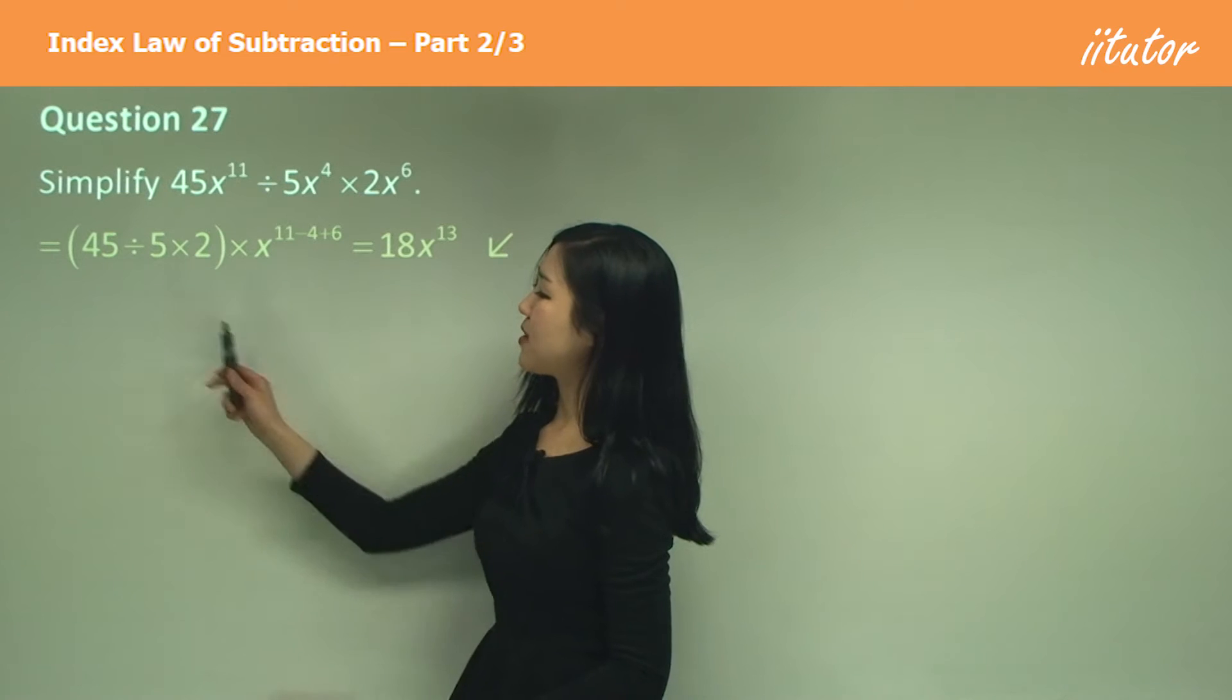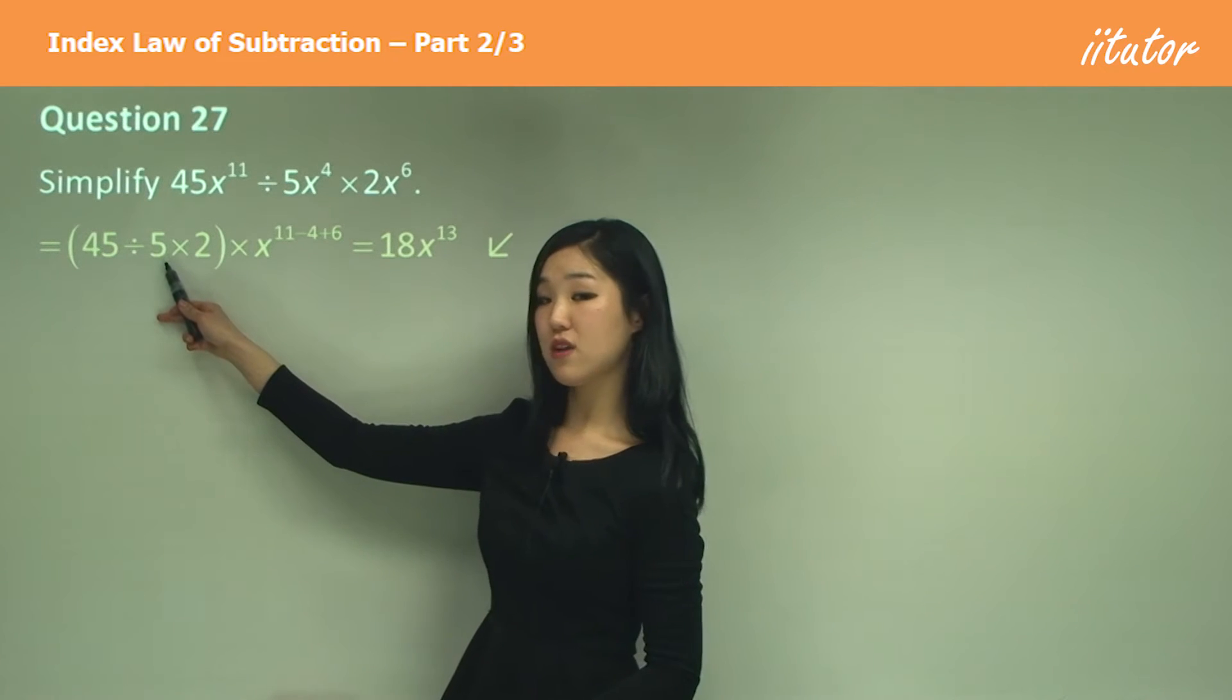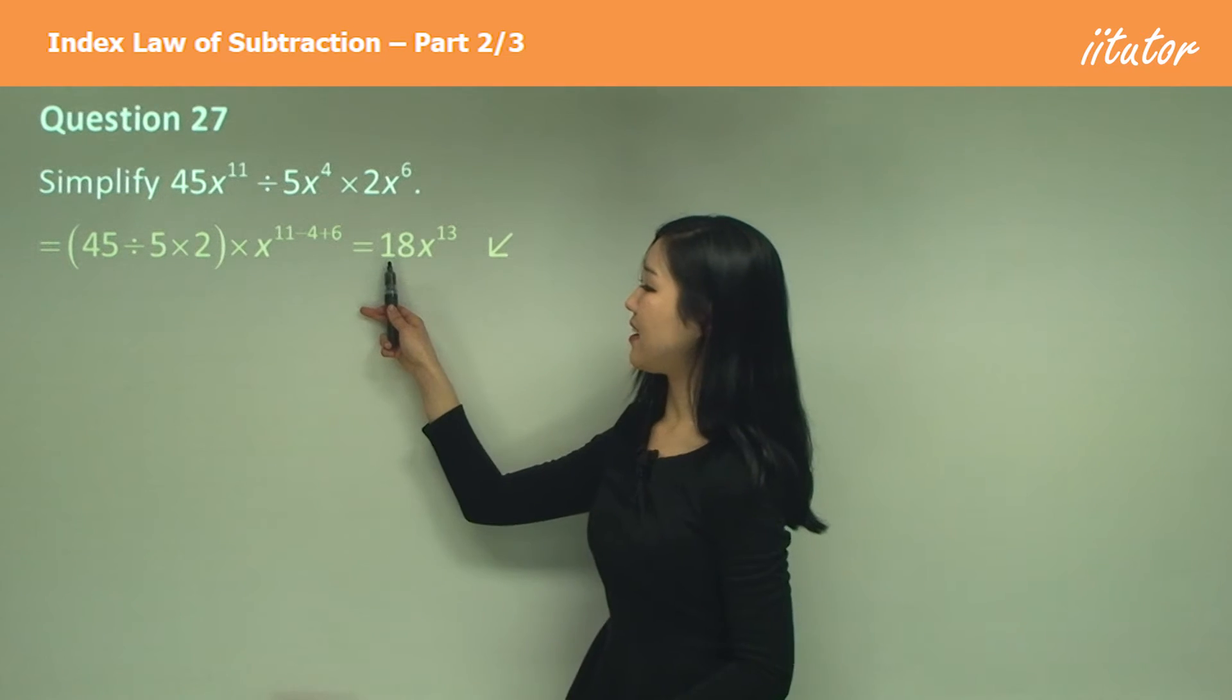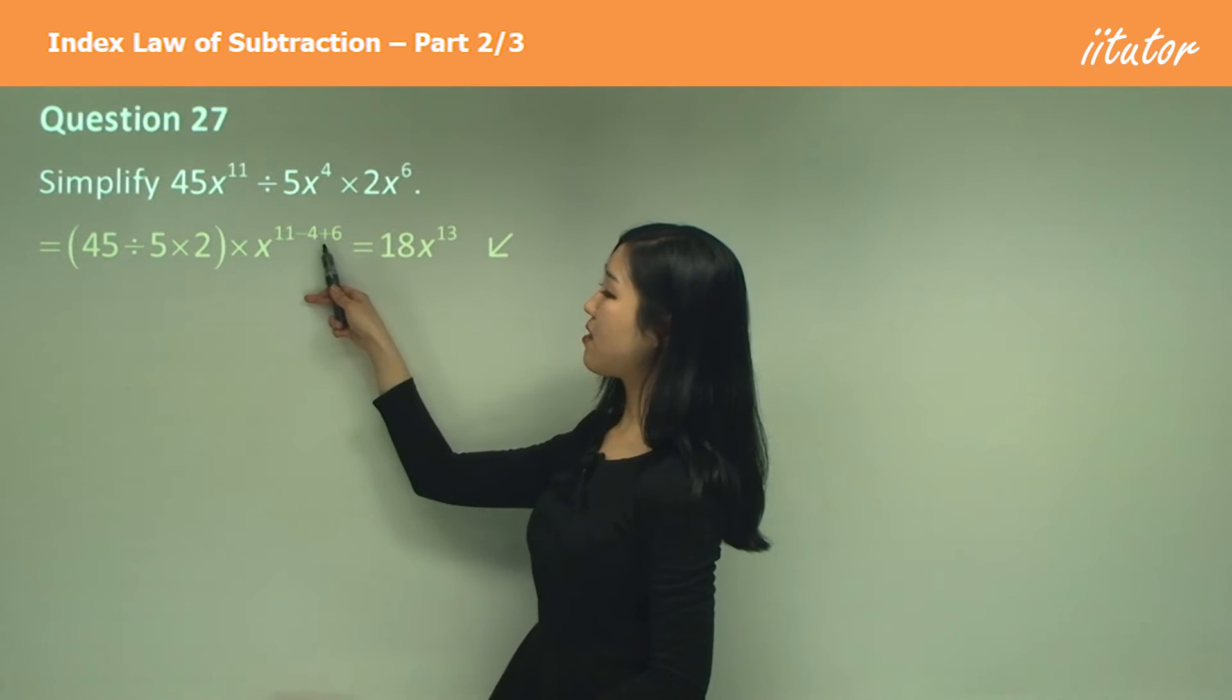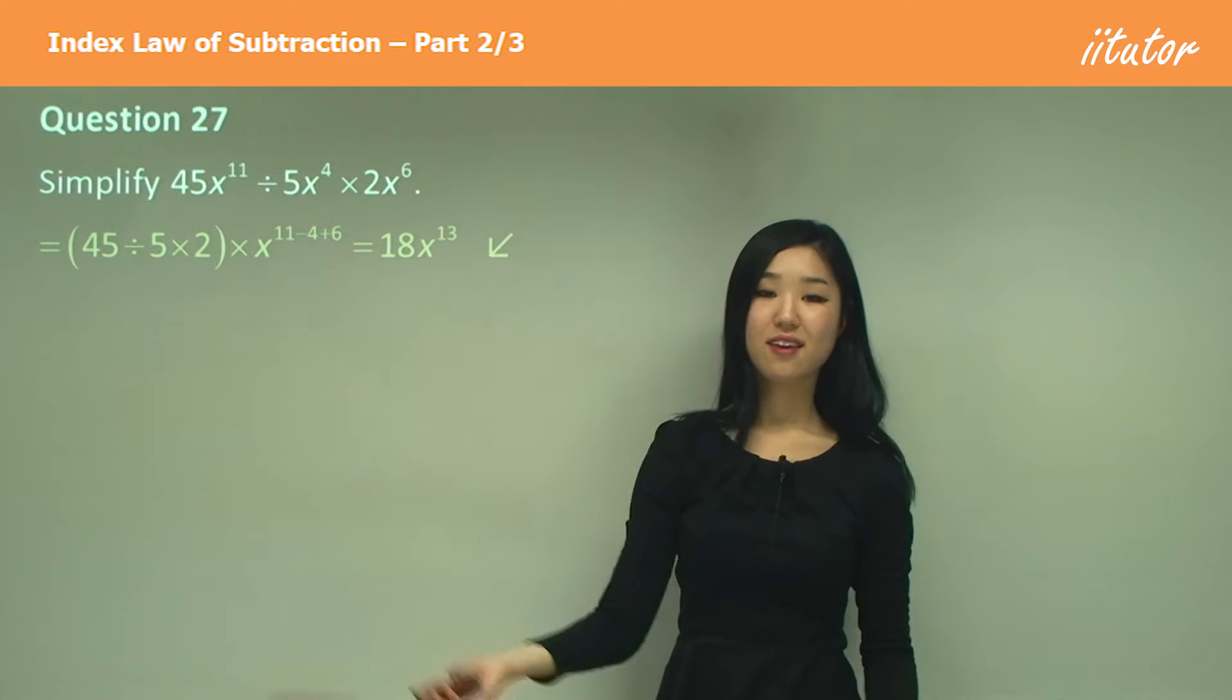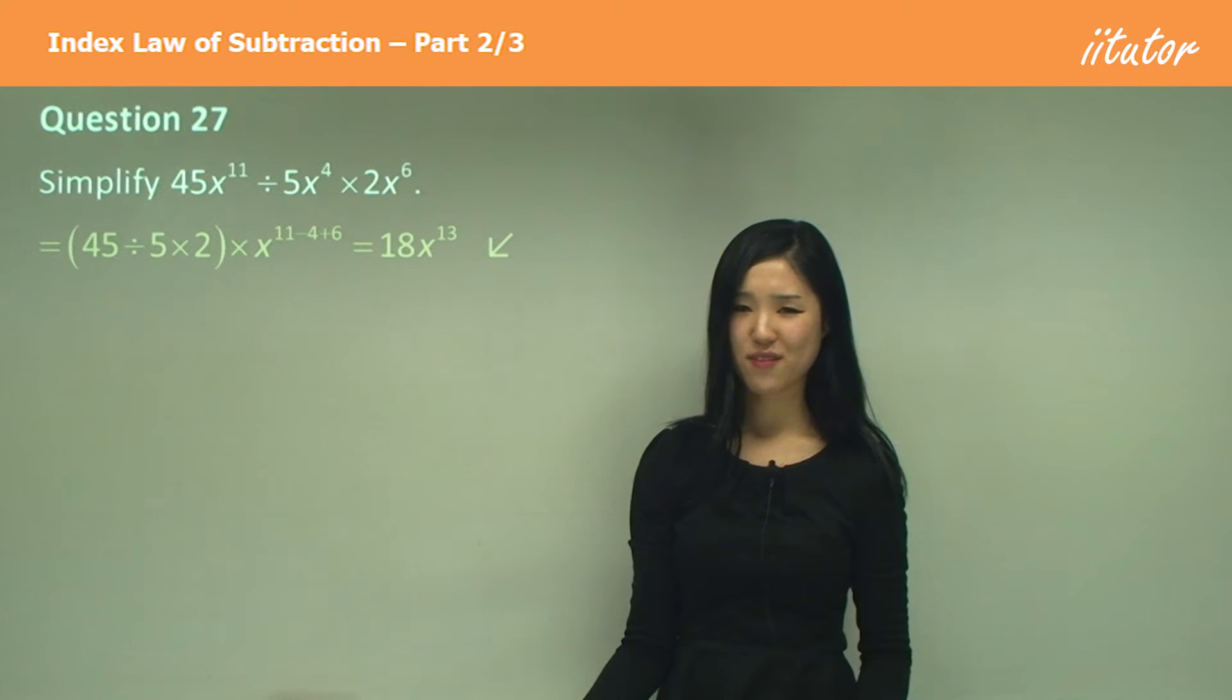That's the answer. 45 divided by 5 is 9, 9 times 2 is 18. x will have a power of 13 because 11 minus 4 plus 6 is 13. It's a very easy skill.